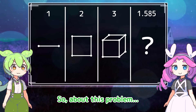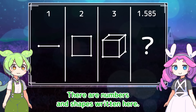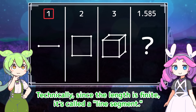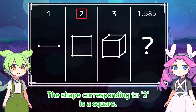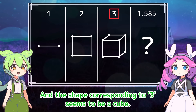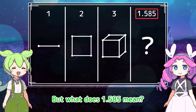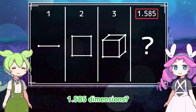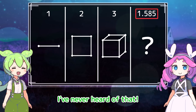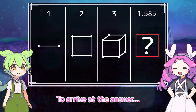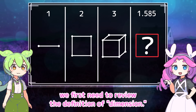So about this problem — there are numbers and shapes written here. The shape corresponding to one is a line. Technically, since the length is finite, it's called a line segment. The shape corresponding to two is a square, and the shape corresponding to three seems to be a cube. These numbers appear to represent dimensions. But what does 1.585 mean? 1.585 dimensions? I've never heard of that. This is quite a tricky problem. To arrive at the answer, we first need to review the definition of dimension.